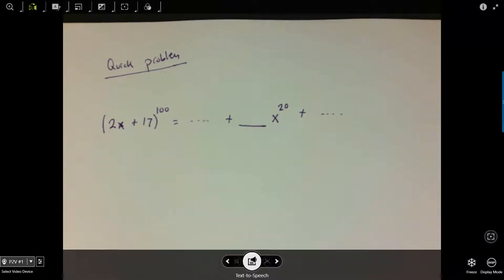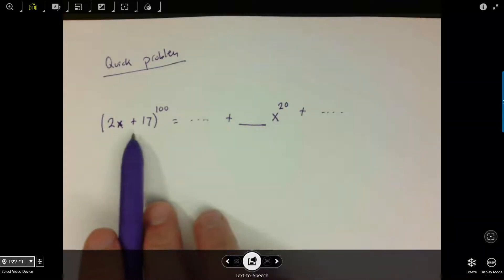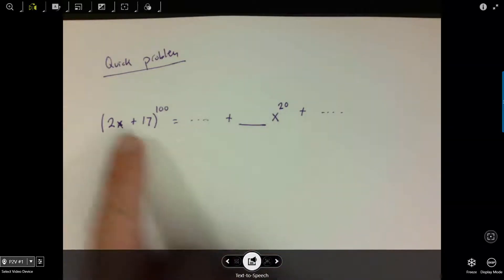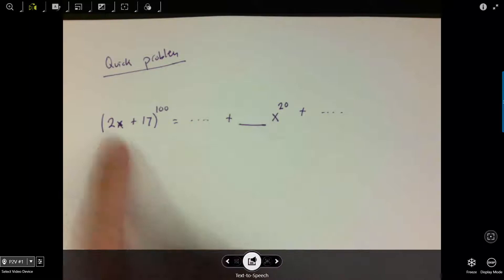Okay, here we go. So I've got this (2x + 17) multiplied by itself a hundred times. So out of those hundred pairs, I'm going to select 20 of them to contain the 2x term, and then the other 80 are going to be the 17.